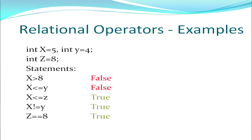The examples show variables x with value 5, y with value 4, and z with value 8. The red statements are false and the green ones are true. Depending on the values that x, y, and z hold at that particular time, I get the result as false or true for the relation, and then I work accordingly in the program.